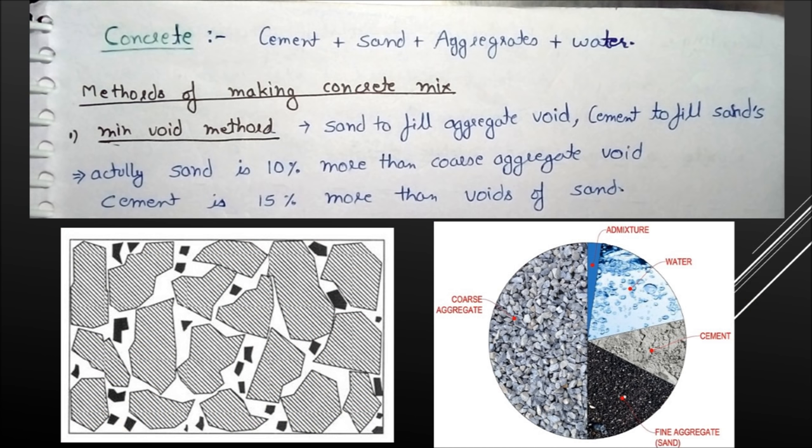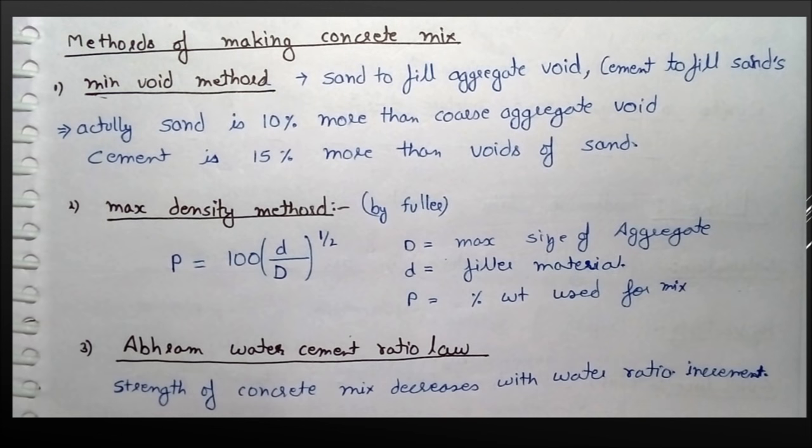The first method of making concrete is the minimum void method. In this method, we believe that sand will fill the voids between aggregate particles, and cement particles will fill the voids in sand. Practically, the volume of sand is taken 10% more than the voids of aggregate, and cement volume is taken 15% more than the voids of sand.